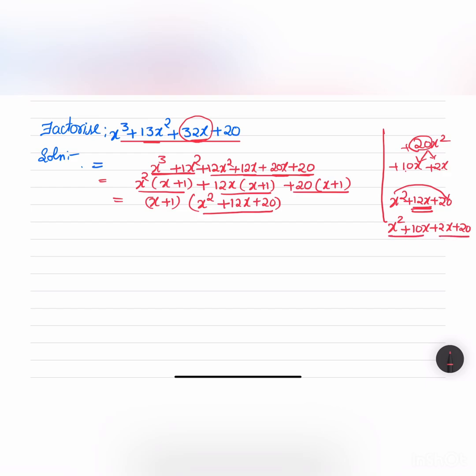Now let us group the terms. x is common in these first two terms and we are left with x + 10. In the last two terms, 2 is common and we are left with x + 10 in the bracket. So x + 2 into x + 10 are the two factors. Let us substitute those in here: x + 1 into x + 2 into x + 10 are the factors of the given polynomial.